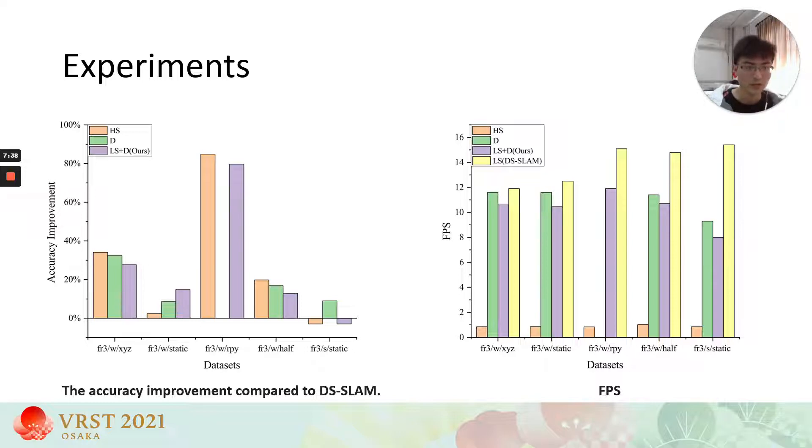Although method HS, the orange one, can achieve a little bit improvement than ours, but it is very slow. DynaSLAM is slow as well. Method D, the green one, will result in tracking failure in special datasets like FR3 WR XYZ datasets, because the system does not have enough points to track.